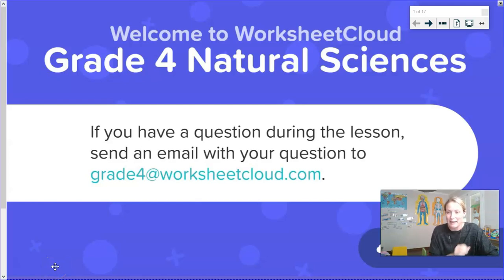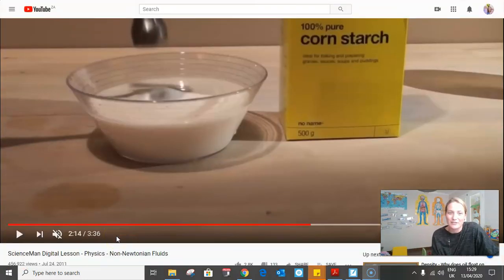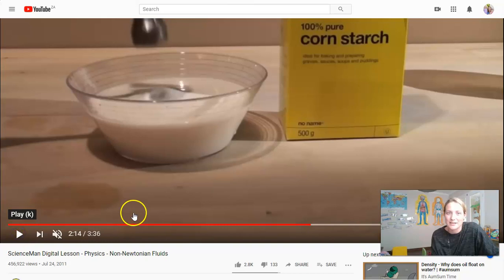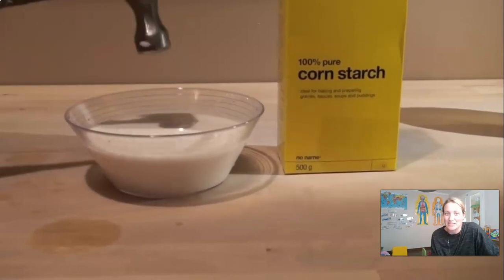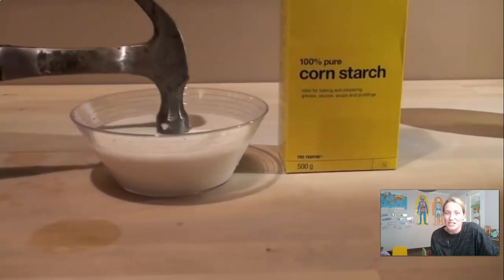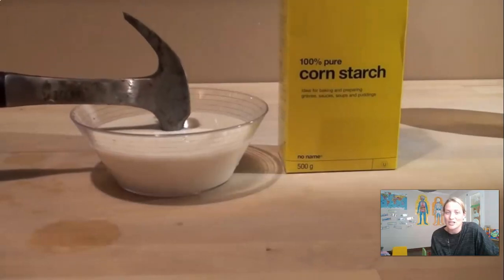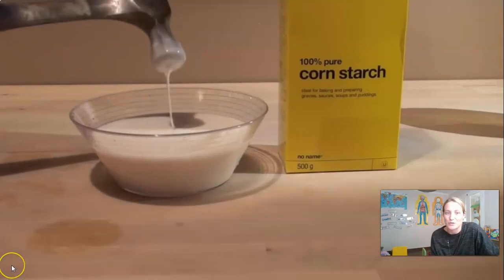Before we look any further, I just would like to remind you of Worksheet Cloud's email address. That is grade4@WorksheetCloud.com. You can send me in any questions or even answers if you like to the questions I pose you during the course of the lesson. So now on your screens, I have a little video clip of what happens with the cornstarch and liquid solution when hit by a hammer. You'd expect it to splash up because it's a liquid. But where the hammer hits actually is solidifying. But if I push the hammer in slowly, it turns back to a liquid. That's because there's less force being applied.